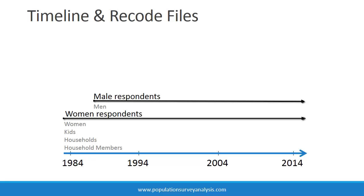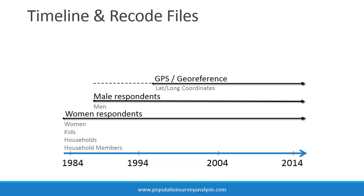In 1996, DHS field staff began collecting latitude-longitude coordinates in PSUs. Coordinates were created for previous surveys going back to 1987 using a method called gazetteering, resulting in a sixth dataset of PSU latitude and longitude coordinates. In 2001, Mali was the first country to implement HIV testing in a subsample of DHS respondents, resulting in a seventh dataset with HIV test results. In 2006, malaria and other blood tests were added to the DHS. Rather than choosing a subsample of respondents, the tests were administered on all respondents, and therefore the results are included in existing data files.